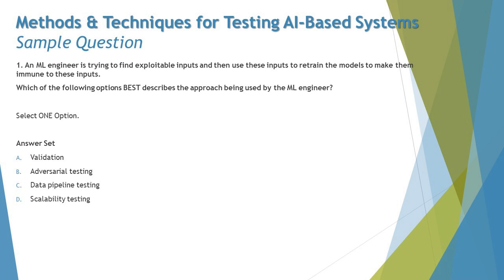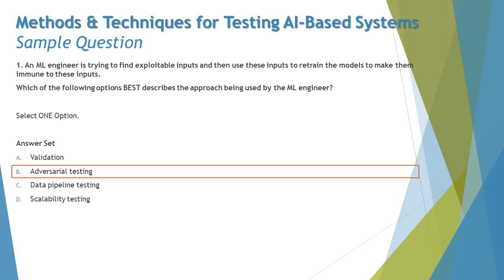Option D is scalability testing — we are not talking about any kind of performance degradation or number of users, so no scalability tests are being performed. Being straightforward and to the point, the right answer is B: adversarial testing is a method where an ML engineer finds exploitable data for the ML model and then retrains the model to accept it but behave as expected.